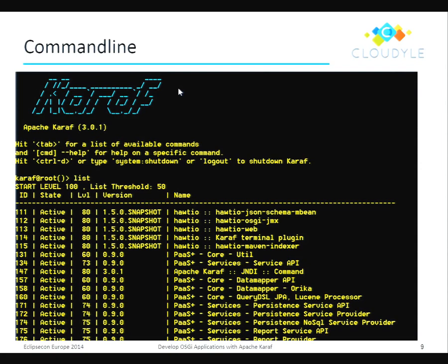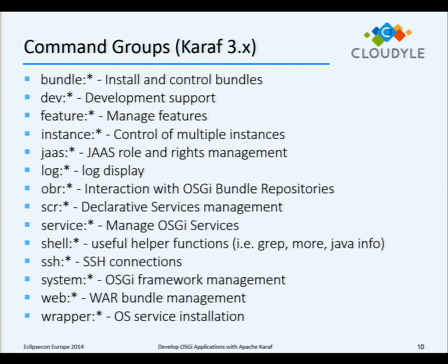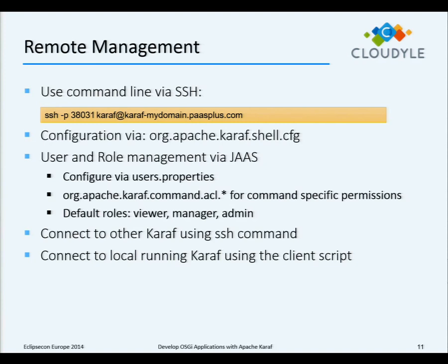Karaf has around 300 built-in commands, and you get more if you install additional features. The commands are grouped into groups or sub-shells, as Karaf calls them. You have commands to manipulate features, to install and control bundles, to look into the logs and get exceptions, and to interact with various modules of the Karaf installation. It also has a built-in SSH server, so you can access the shell from remote — you can have your server running elsewhere and access it from your local machine. From inside Karaf you can also connect to other Karaf instances using built-in SSH commands.